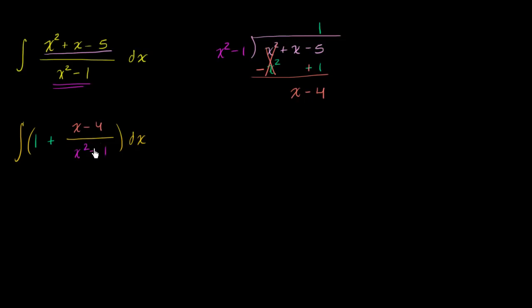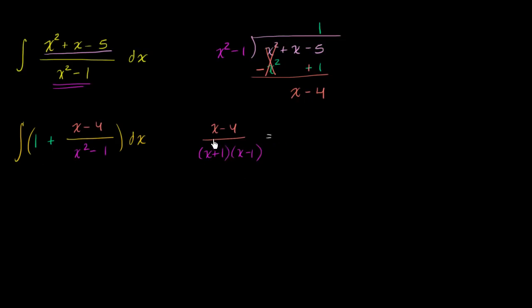Partial fraction expansion means writing x minus four over x squared minus one as the sum of rational expressions with lower-degree denominators. We can factor x squared minus one as x plus one times x minus one, and ask: can we write this as A over x plus one plus B over x minus one?